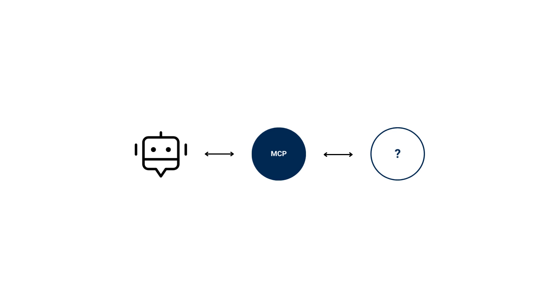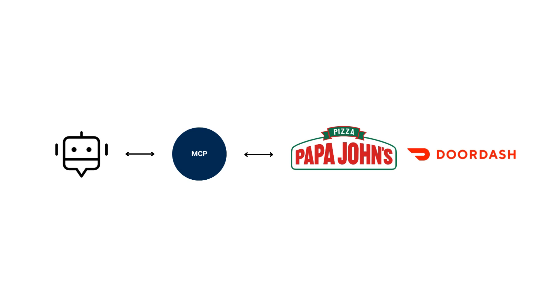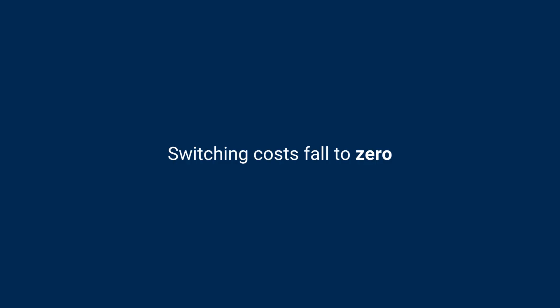This is great news for anybody that has a website or app, because it means you can get a place in the LLM — you can be one of those tools. In the pizza example, if my agent looked for an MCP for Domino's and it didn't exist, it would probably find one for DoorDash or Papa John's and say, 'I don't have a way to order from Domino's — would a pepperoni pizza from Papa John's be okay?' And switching costs start to fall to zero.